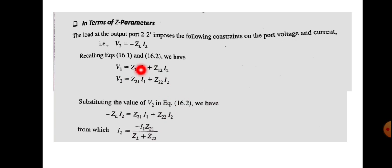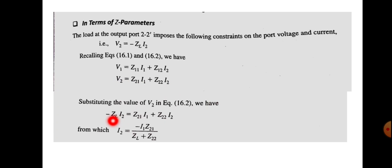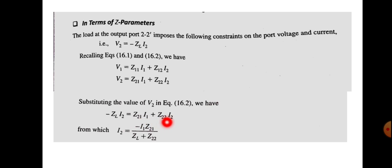We substitute this V2 value into the second Z-parameter equation (equation 16.2). So −Z_L·I2 = Z21·I1 + Z22·I2. Rearranging, we can write I2 = Z21·I1 / (−Z_L + Z22), but note there are two I2 terms, so we need to rearrange first.